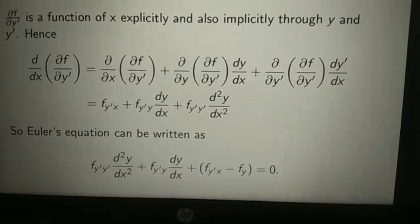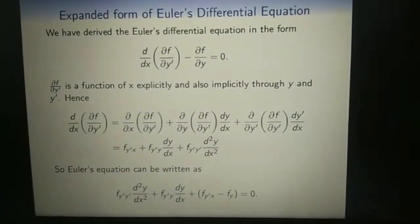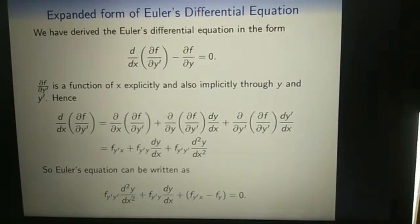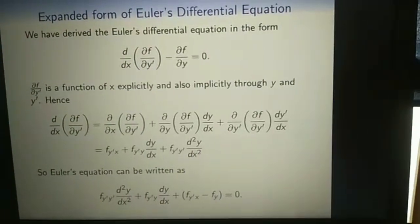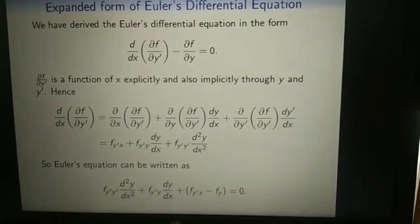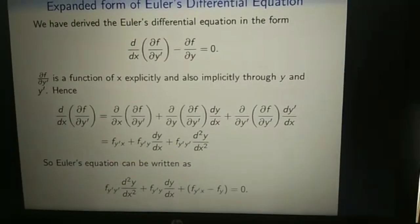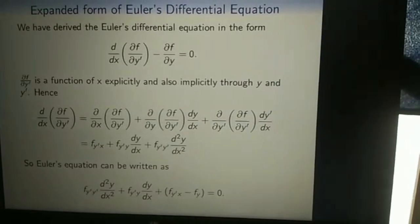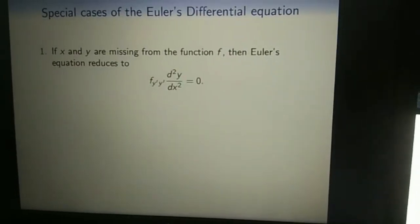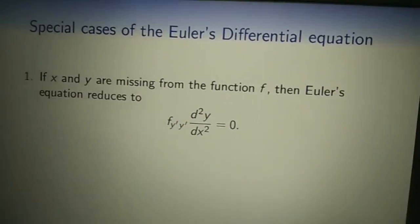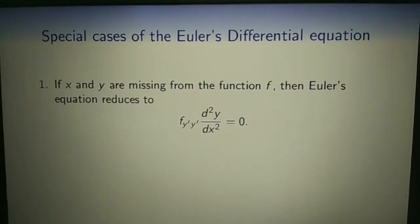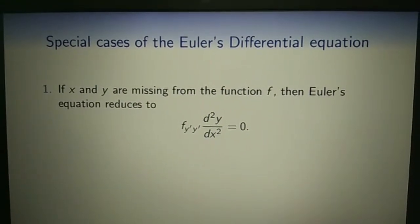Substituting into Euler's equation and setting it equal to 0, this equation is of second order unless f_{y'y'} equals 0. So the extremals constitute a two-parameter family of curves. The stationary functions are those in which the two parameters are chosen to fit the boundary conditions. Most practical problems come under three cases of Euler's differential equation, which we now specify.